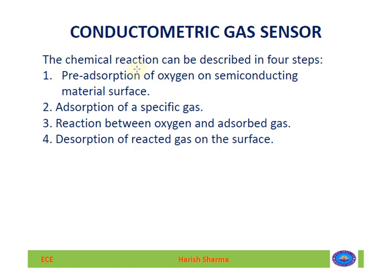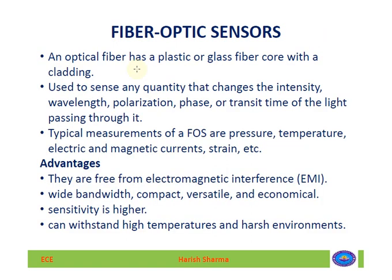Applications of conductometric gas sensors include environmental monitoring to measure different types of gases, exhaust gas sensing in automobiles to check carbon monoxide and other harmful emissions, air conditioning in airplanes and spacecraft, sensing networks for ethanol breath analyzers, odor sensing, and food control applications.